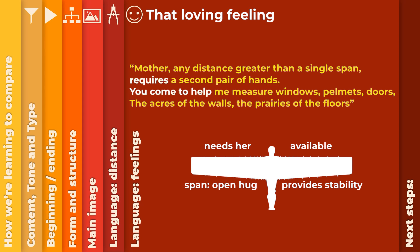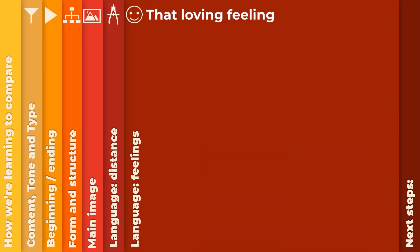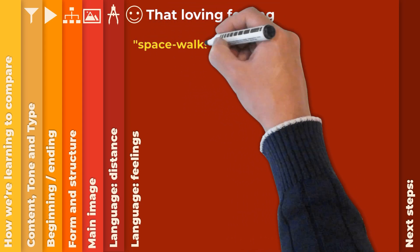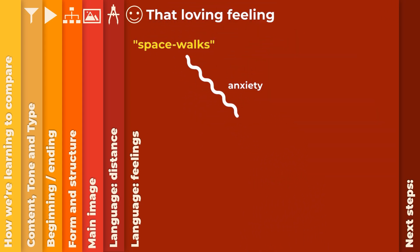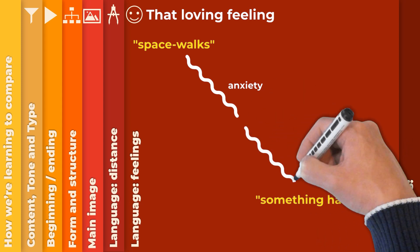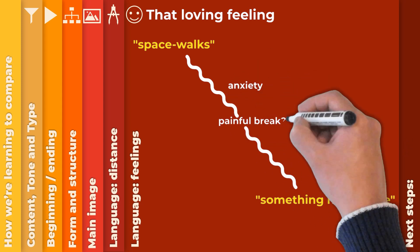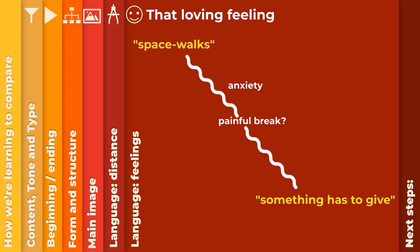Yet at the same time, he is exploring his own world, his new universe as he spacewalks floating away from her. There is anxiety there — 'something has to give' suggests there may be some pain to his independence, even if the vagueness of 'something' is deliberately ambiguous, as who knows what the future has to hold. And her still pinching that last one hundredth of an inch suggests not only will she carry on supporting him forever, she may carry on too much.